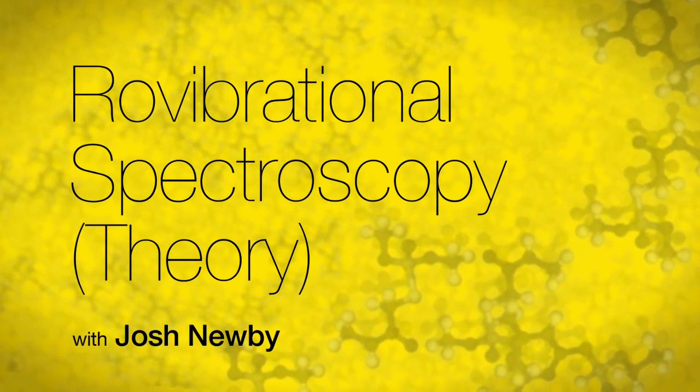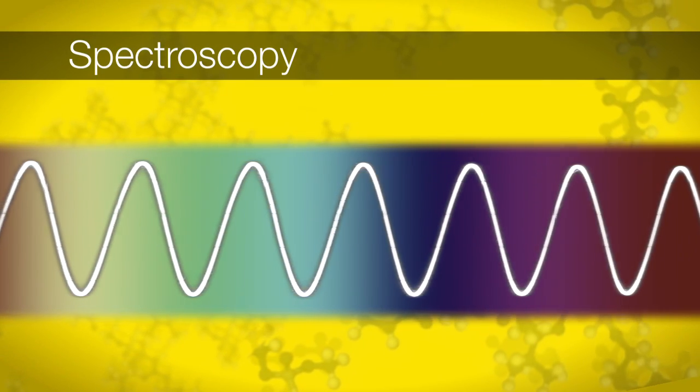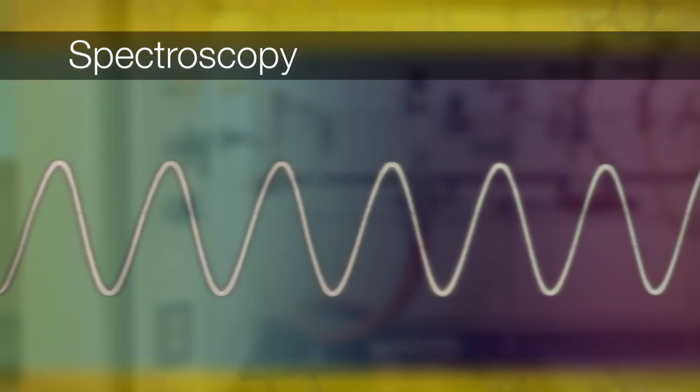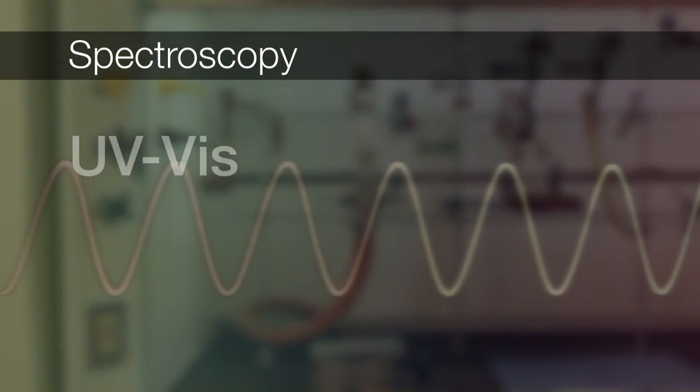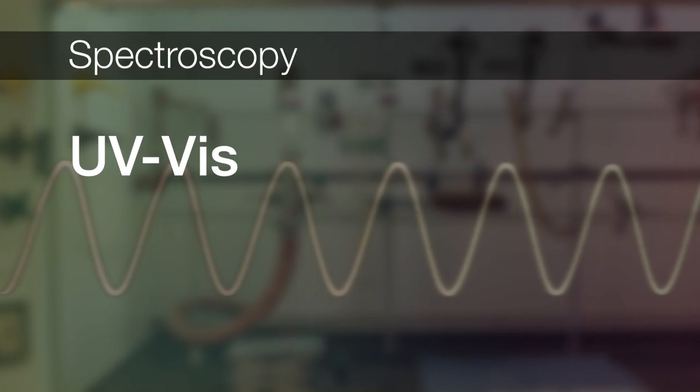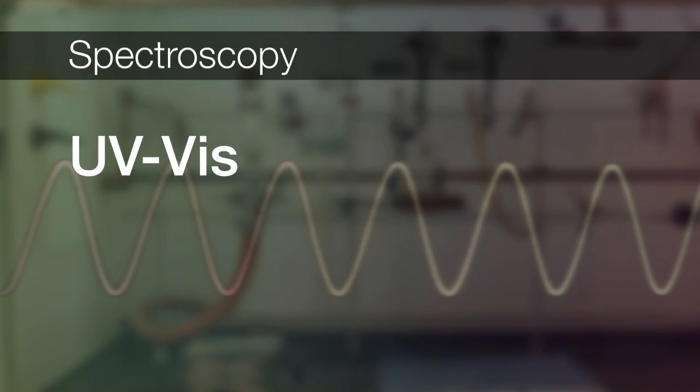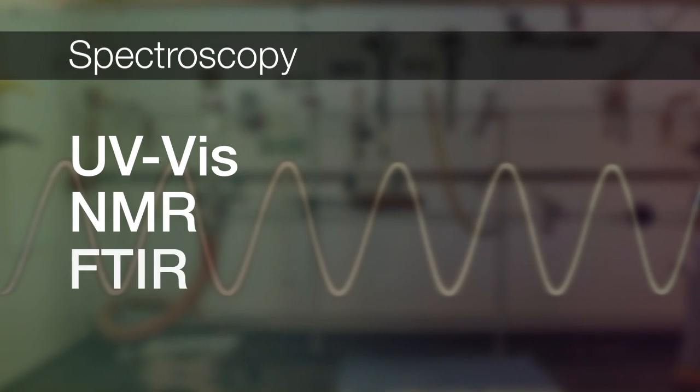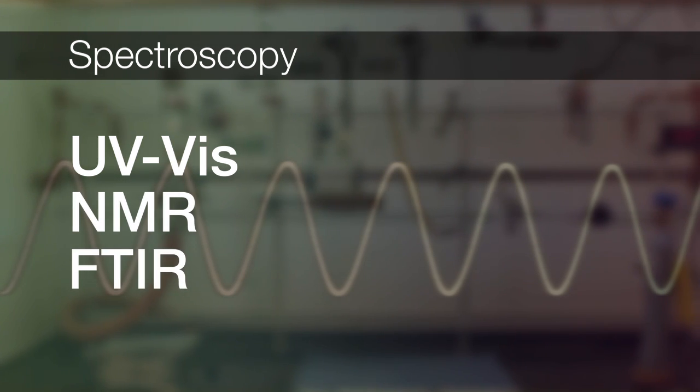Let's talk about spectroscopy. Chemists use spectroscopy for a variety of purposes. In general chemistry, we used UV-vis spectroscopy to learn about the light-absorbing nature of chemicals. In organic chemistry, we used NMR and FTIR to derive structural information of compounds.